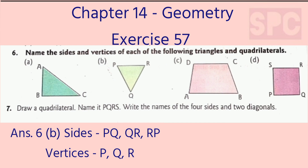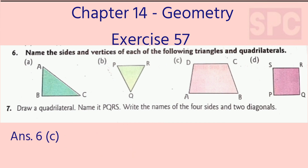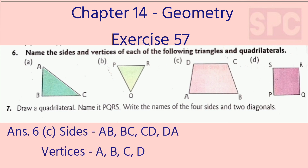Part C: This is the figure of a quadrilateral with four sides. The names of the sides are AB, BC, CD, and DA. And the four vertices are vertex A, vertex B, vertex C, and vertex D.